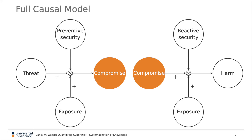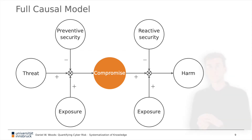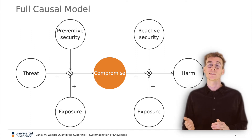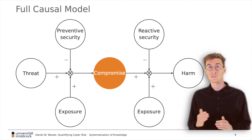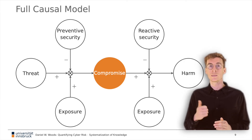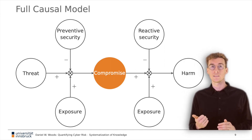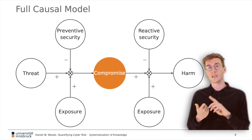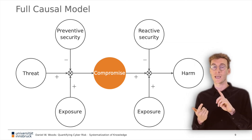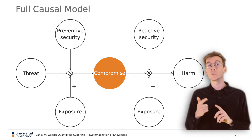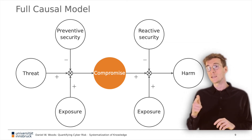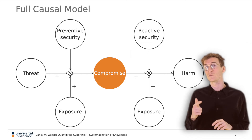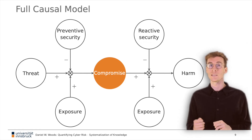Thus, it makes sense to add compromise as an intermediate variable to our model. This essentially splits security in two. There are those interventions that happen before compromise and those that happen after compromise, which we call preventative and reactive security, respectively.